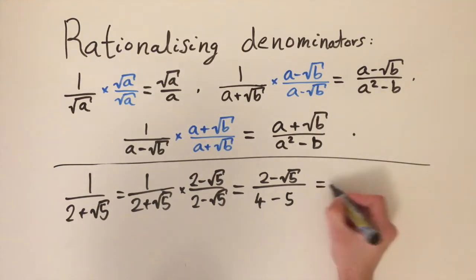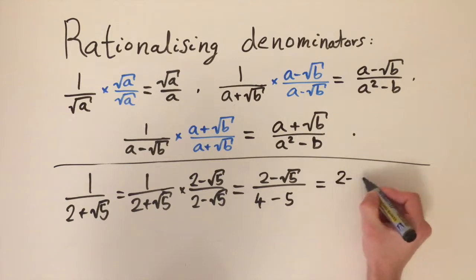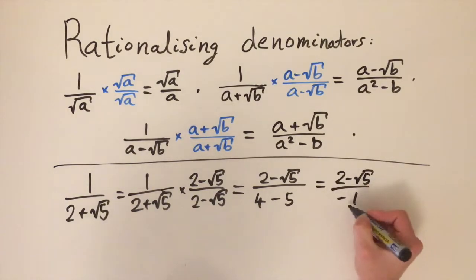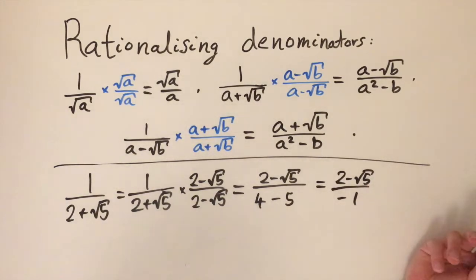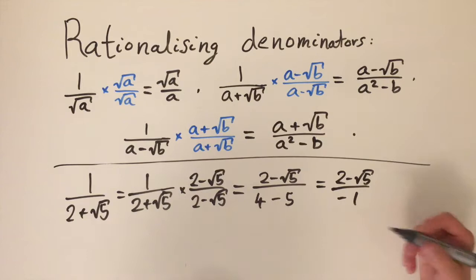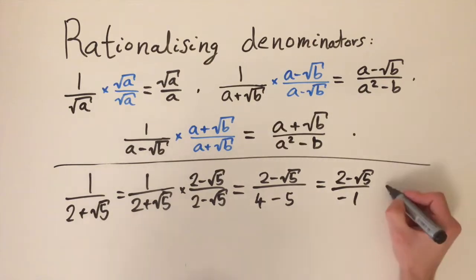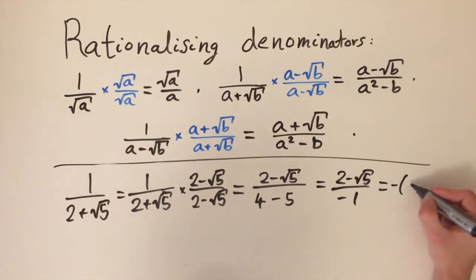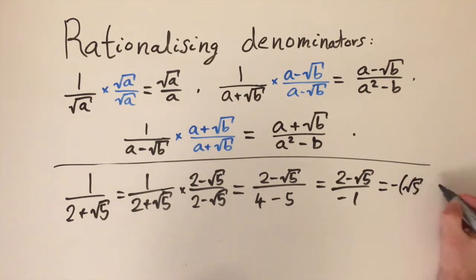This lines up with the formula: a squared minus b gives 4 minus 5, which is minus 1. So we have 2 minus the square root of 5 divided by minus 1. Dividing by minus 1 is the same as multiplying by minus 1.